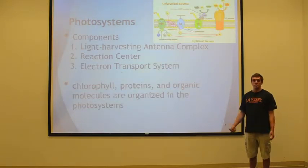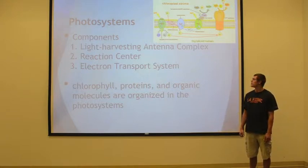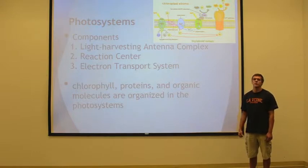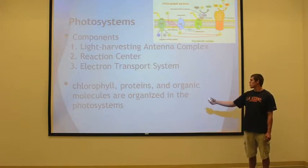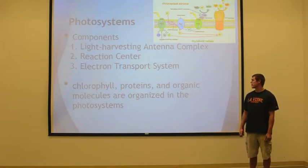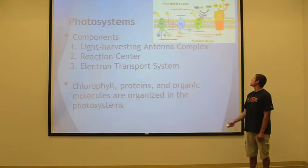Photosystems. There are three components of photosystems. The first one is the light-harvesting antenna complex — this is where light is absorbed. The second one is the reaction center, which is an enzyme that uses light to reduce molecules. The third is the electron transport system. Chlorophyll, proteins, and organic molecules are organized in photosystems, and this picture shows the processes of photosystems.